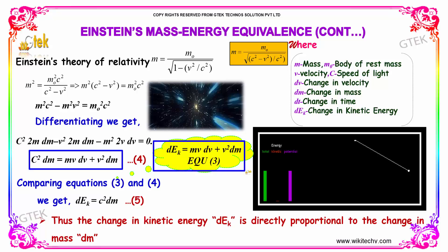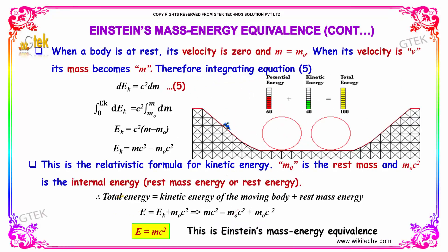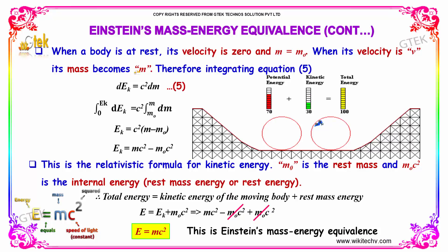We now have two equations. Comparing them, MV·dV + V²·dM equals dEk, and C²·dM = MV·dV + V²·dM. Therefore, dEk = C²·dM — the change in kinetic energy is directly proportional to the change in mass. When the body is at rest, velocity is zero and mass is M₀; when velocity is V, mass is M. Integrating dEk = C²·dM from M₀ to M gives Ek = C²(M − M₀), which equals MC² − M₀C².